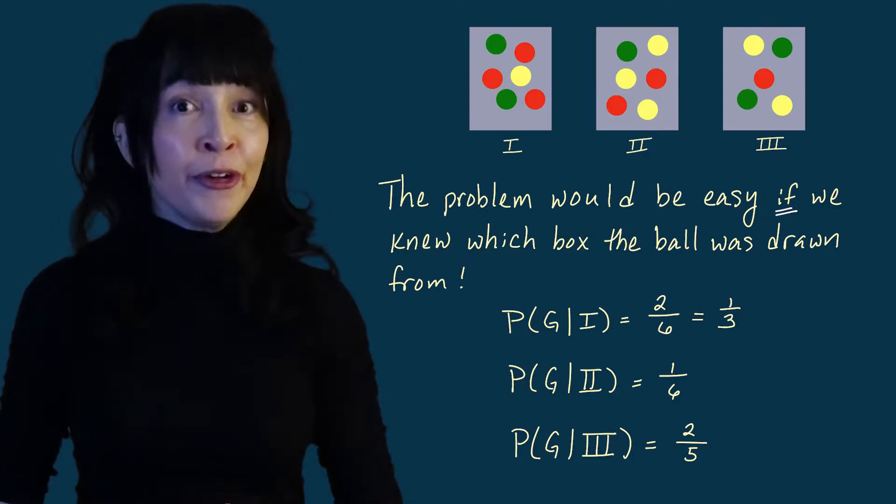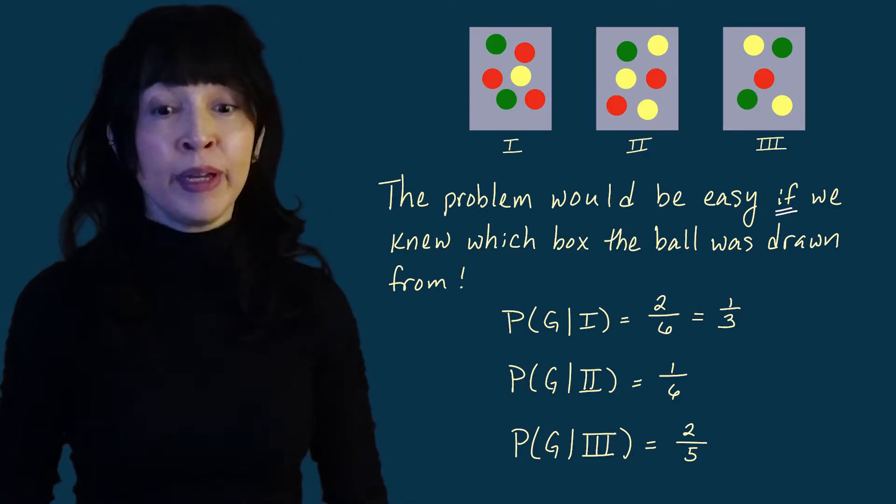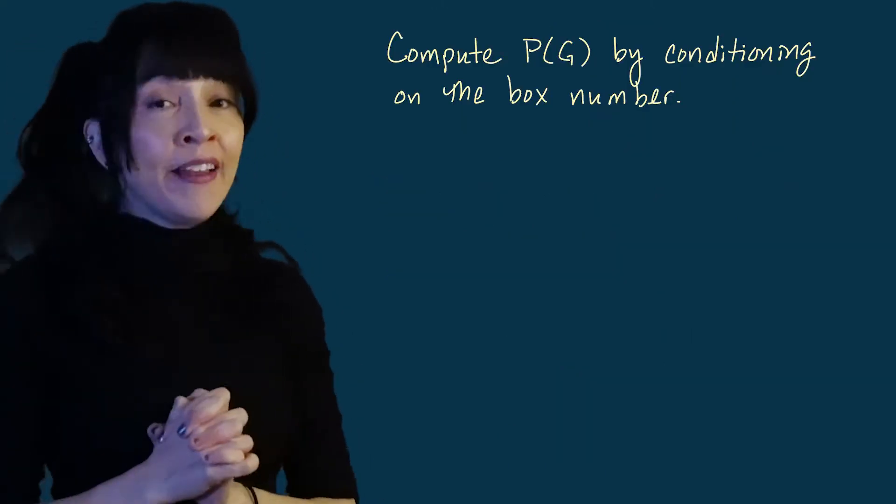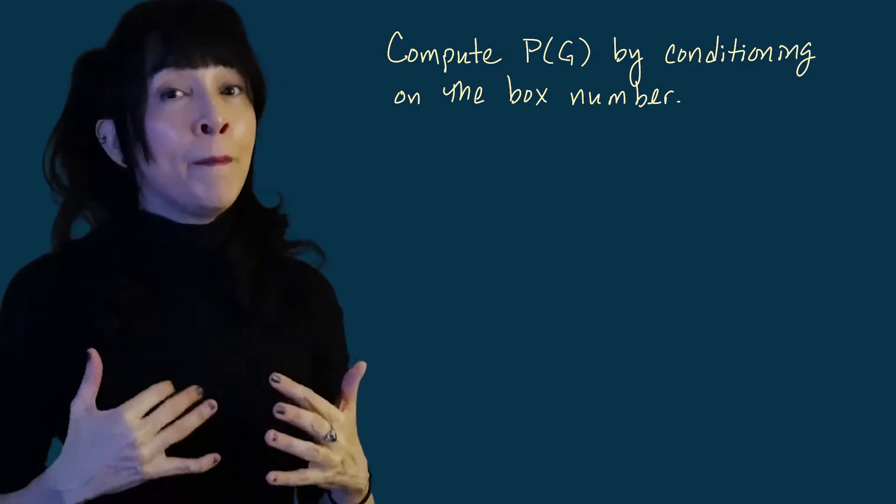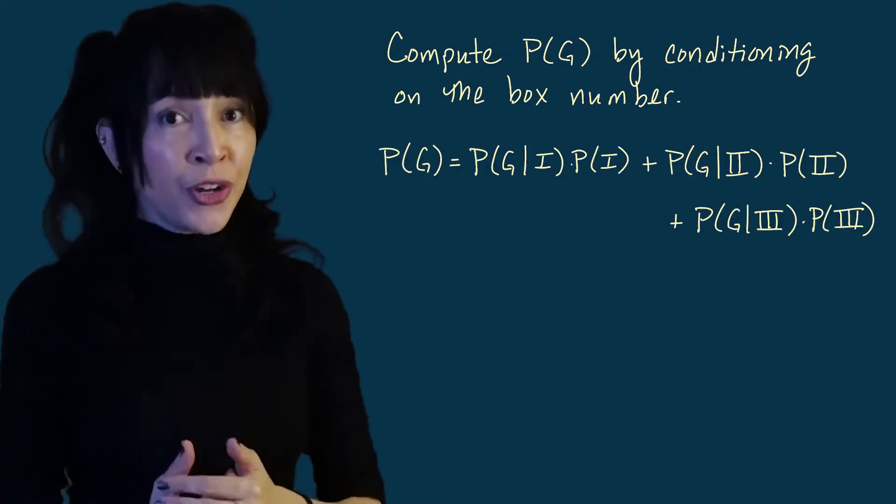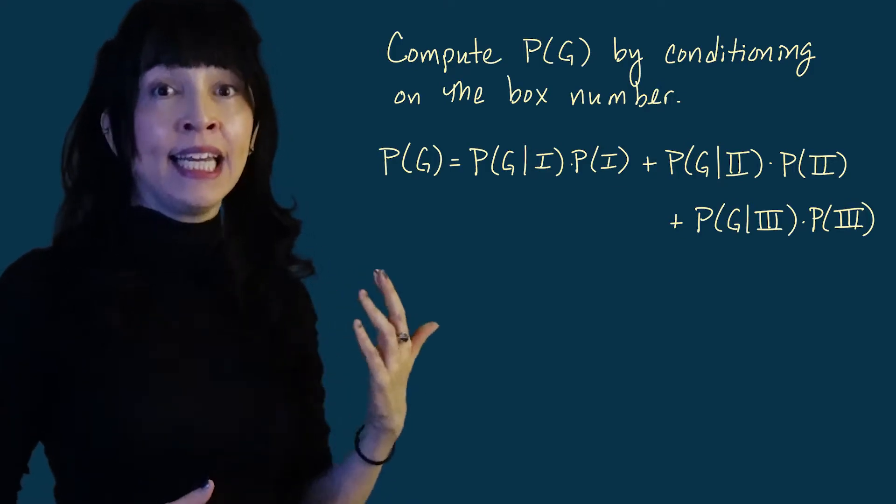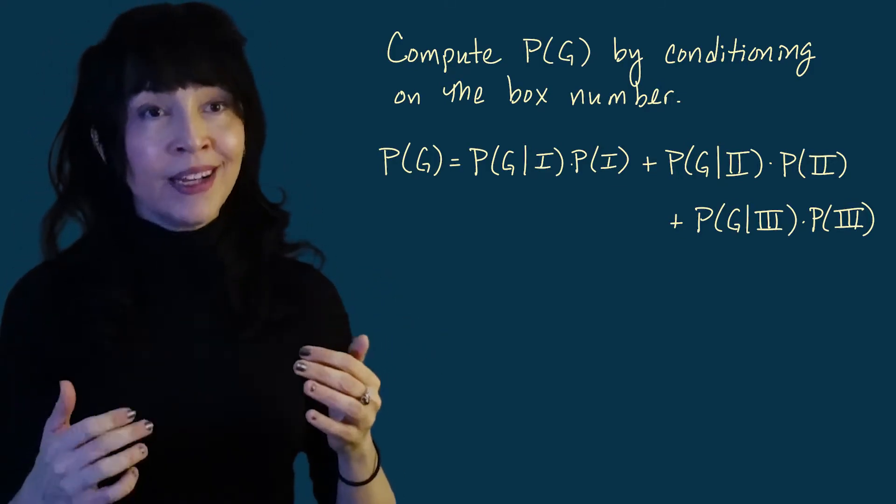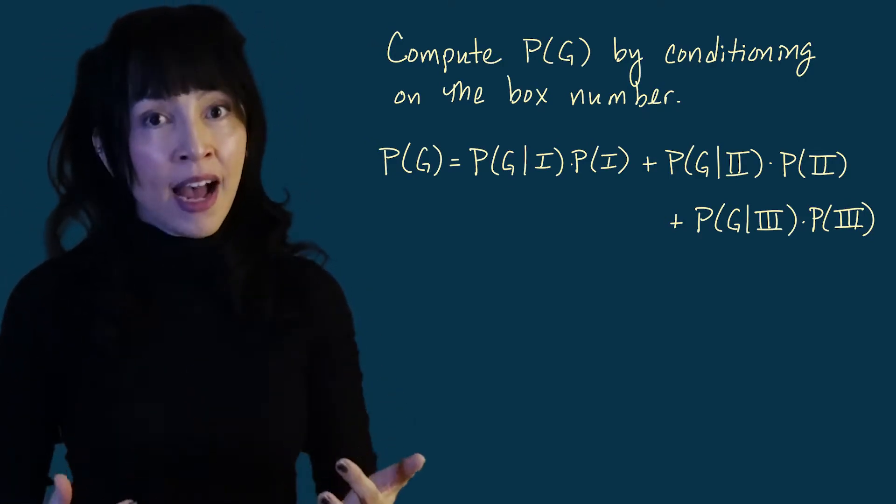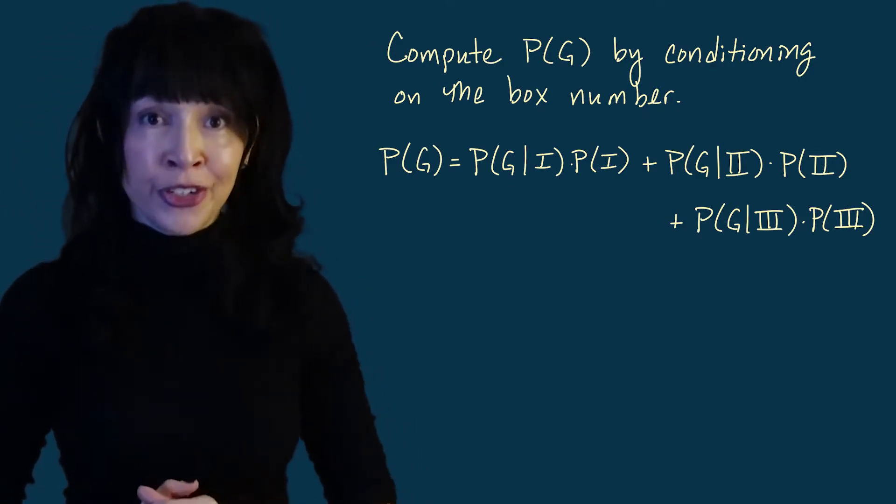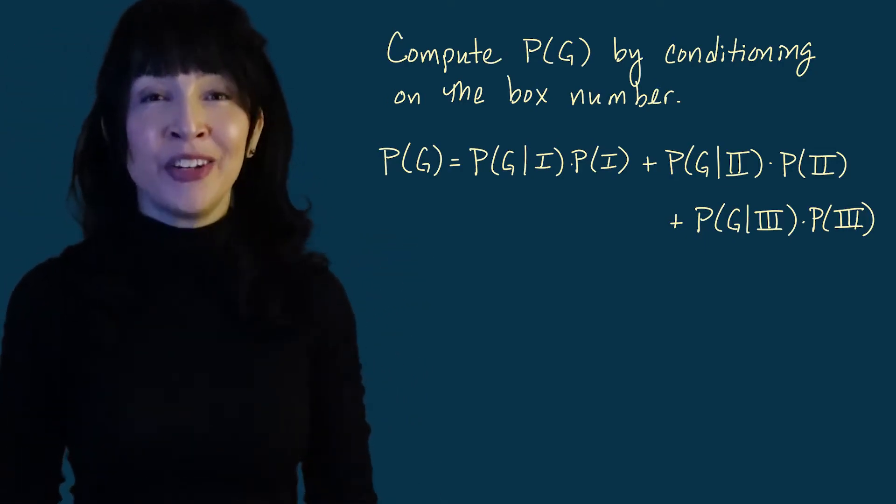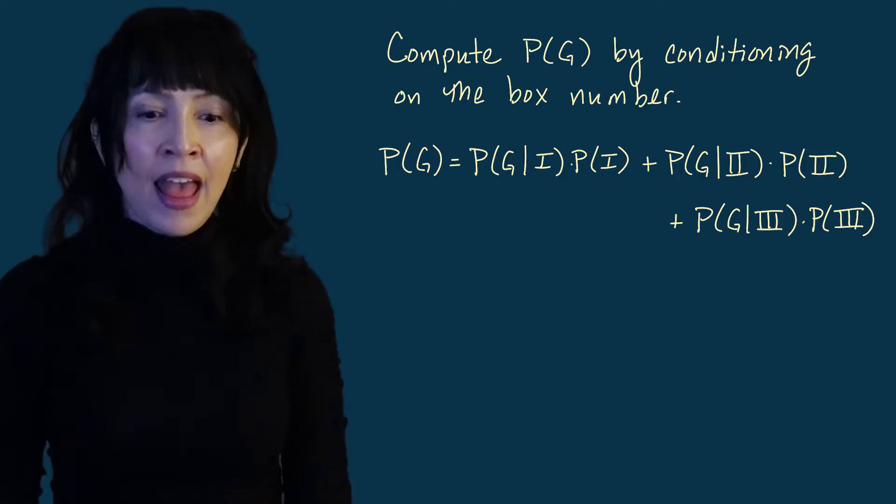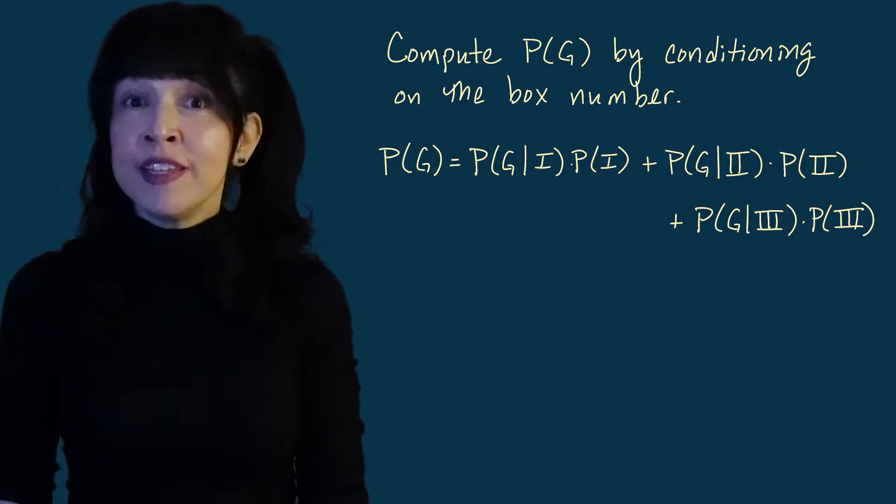So let's put it all together with the law of total probability, because what we really want is the probability we chose a green ball. So I'm going to write the probability I choose a green ball by conditioning on which box we chose. So this is going to be the probability of a green given box one times the probability of box one, plus the probability of a green given box two times the probability we chose box two, plus the probability of a green given box three times the probability that we chose box three. And we know all of these numbers.